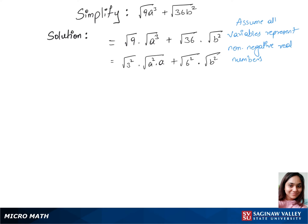In our next step we'll cross out square and square root, so that gives us three here times we'll separate square root here, so root of a squared times root of a, plus we get six here times we'll still keep the same for now, root of b squared.